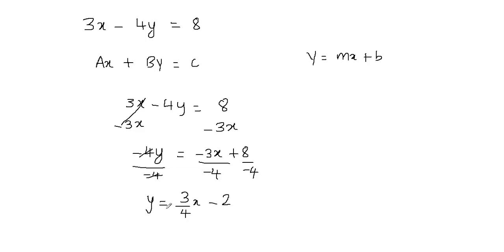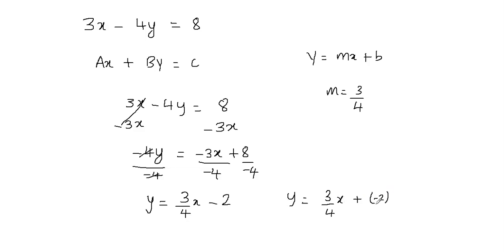We now have y equals three-fourths x plus negative 2, which matches the slope-intercept form y equals mx plus b. The slope is the coefficient of x, which is three-fourths, and the y-intercept is negative 2, so b equals negative 2. This is our final equation in slope-intercept form — that's how you convert from standard form to slope-intercept form.